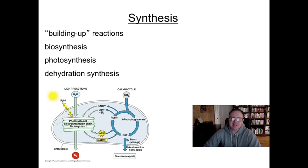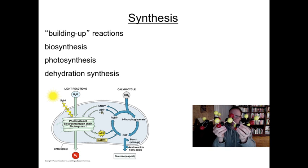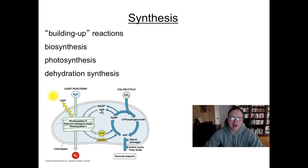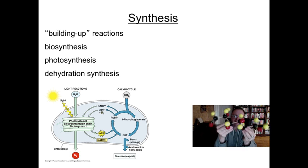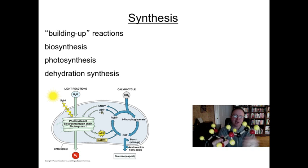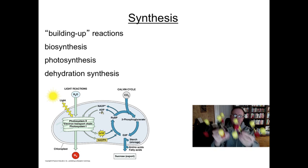Photosynthesis takes simple molecules like carbon dioxide and water and builds up more complex molecules like the glucose molecule. Another major kind of synthesis reaction that we've learned about is dehydration synthesis. This is when we're taking building blocks and putting them together by removing water. So if I had several glucose molecules, I could join them together, form a disaccharide, and eventually start the process of forming a polysaccharide like glycogen.